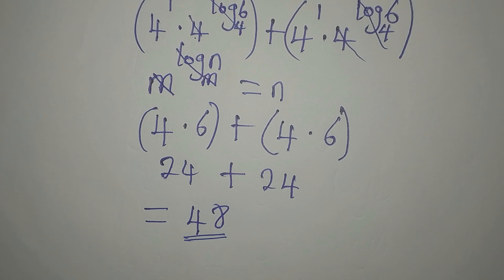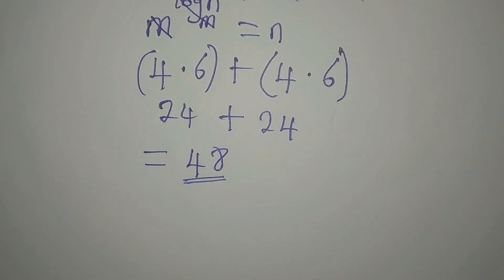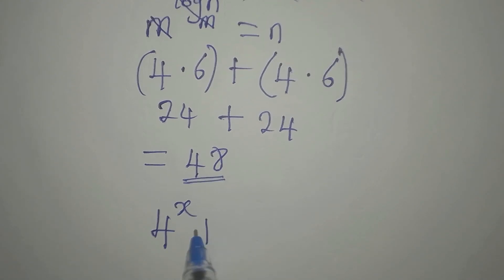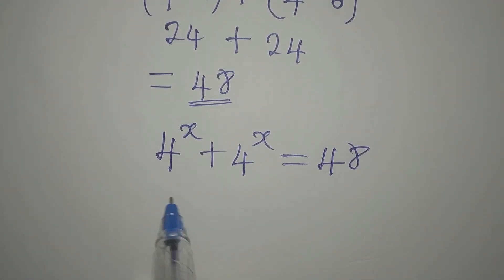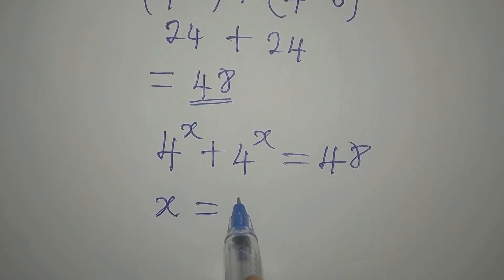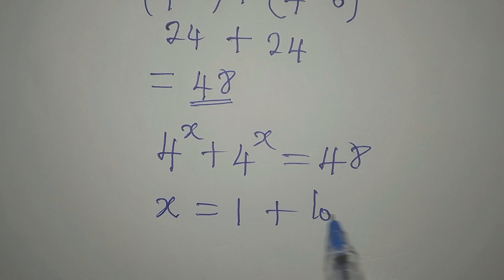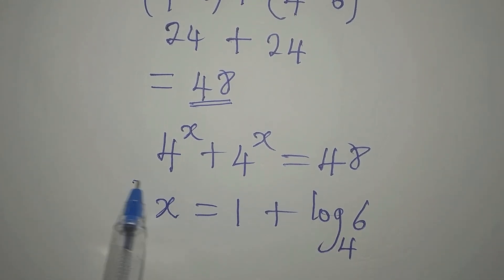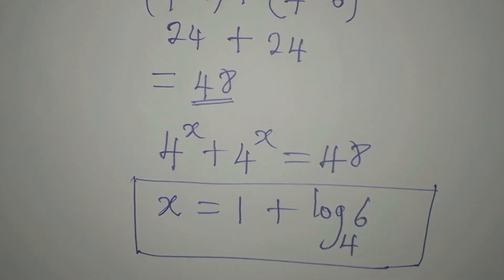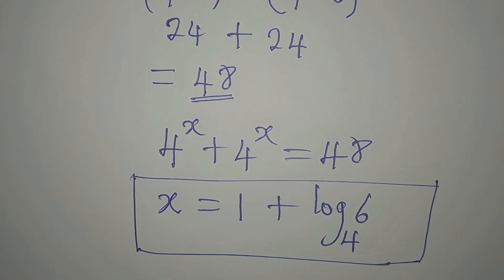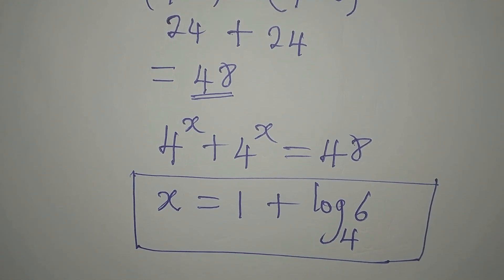This is the same 48 we had on the right-hand side of the equation 4 to the power of x plus 4 to the power of x equals 48. This confirms that x truly equals 1 plus log 6 to base 4. If you haven't subscribed to my channel, it's not too late — subscribe for more educational videos like this.